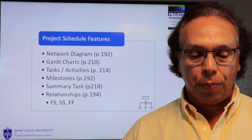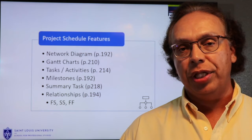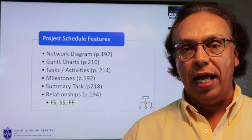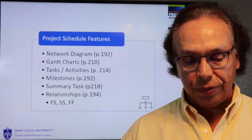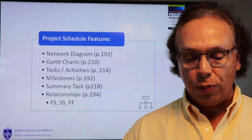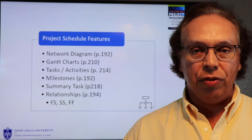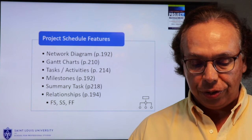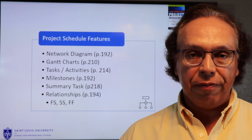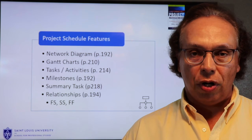In this chapter, there are several project schedule features to point out. Network diagrams on page 192 help you understand relationships such as predecessors and successors. Gantt charts on page 210 are visual depictions of schedule and time, which are great tools for leadership reviews. Tasks and activities as diagrammed on page 214 are good to show your team and get them on board with the detailed schedule. Milestones on page 192 are those significant events to include in your schedule. Summary tasks on page 218 show roll-ups of child tasks, illustrating the parent-child relationship. Page 194 describes the three primary relationships: finish-to-start, start-to-start, and finish-to-finish.